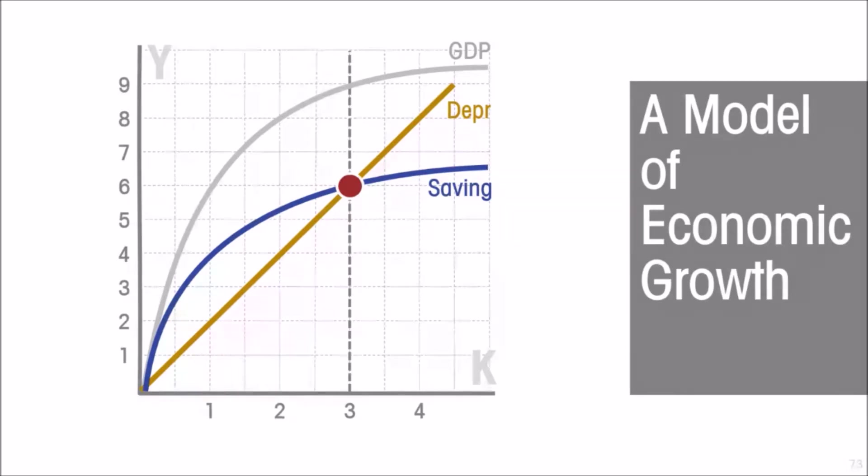What that means is that as capital grows, two things are happening. One is that capital is experiencing diminishing returns. It is adding less and less to output each time and therefore less and less to savings and therefore less and less to gross investment. So gross investment is growing, but at a smaller rate. But depreciation is growing proportionately.